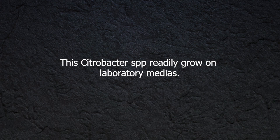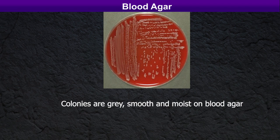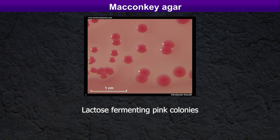Let's discuss how to identify Citrobacter bacteria in the laboratory. Citrobacter species readily grow on laboratory media. Colonies are gray, smooth, and moist on blood agar. On MacConkey agar it gives lactose fermenting pink colonies. Colonies with greenish metallic sheen can be seen using methylene blue agar (EMB agar).